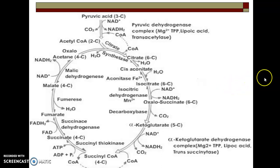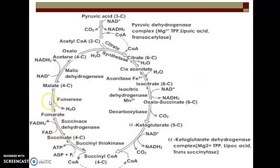In this cycle we get lots of energy in the form of ATP. The intermediates or bioproducts are: pyruvic acid, citric acid, cis-aconitate, isocitrate, oxalosuccinate, alpha-ketoglutarate, succinyl-CoA, succinic acid, fumaric acid, malic acid, and oxaloacetate or oxaloacetic acid.